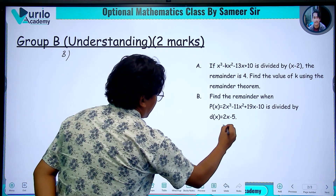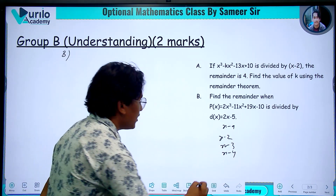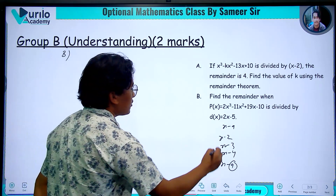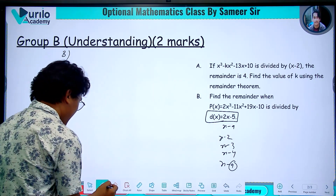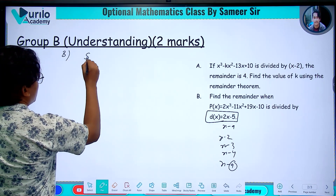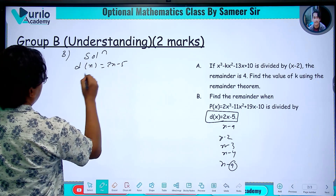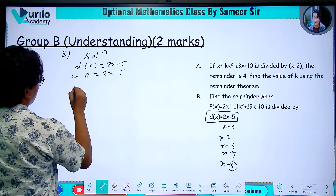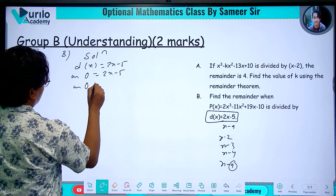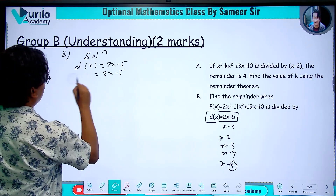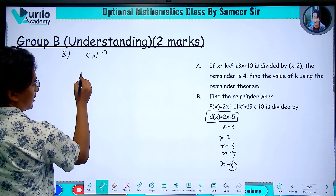We are talking about x minus a form. Here d(x) equals 2x minus 5. We set 2x minus 5 equal to 0 to find the value of x.